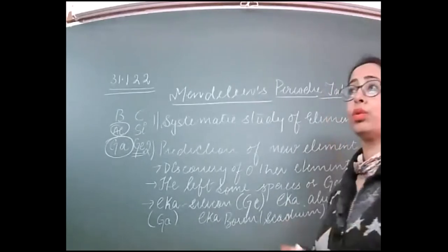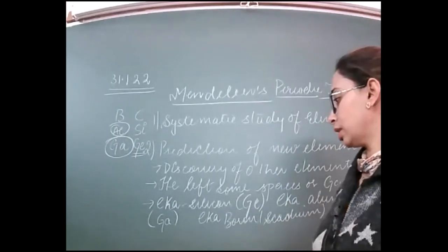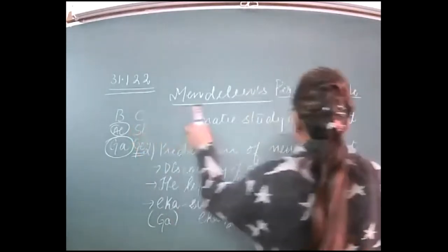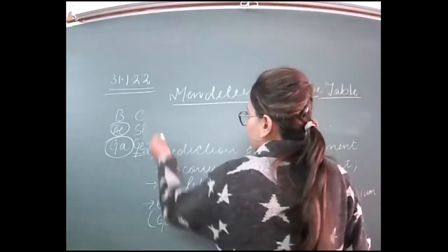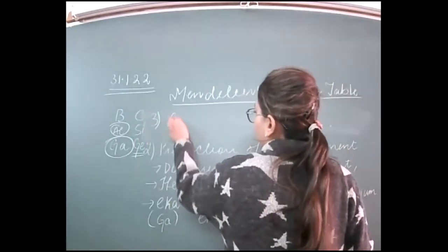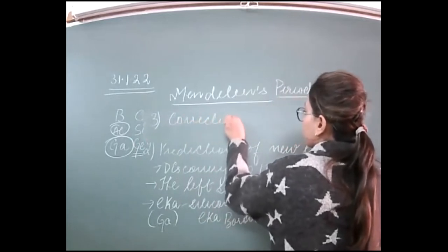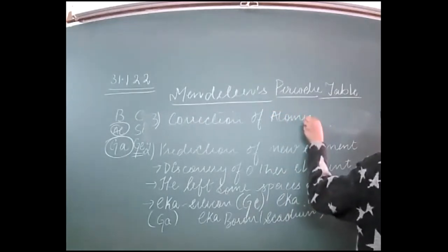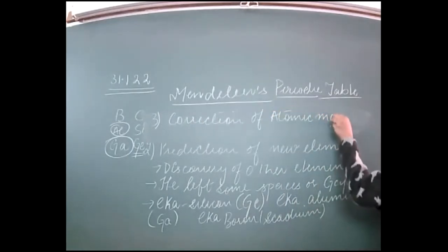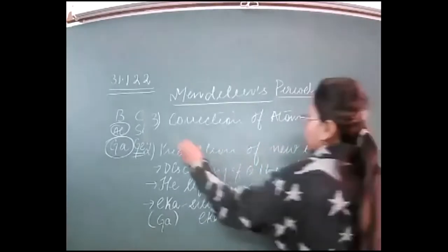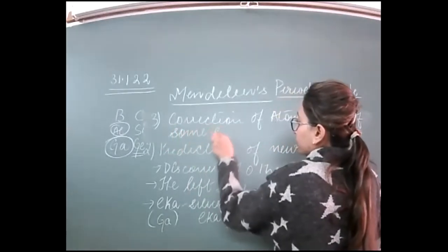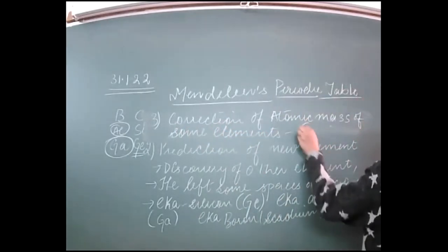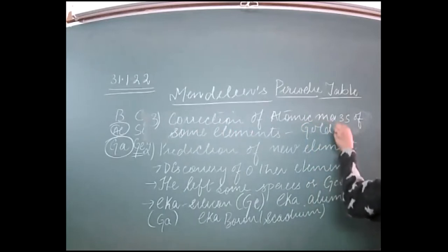The third merit is that he corrected the atomic masses of certain elements whose atomic masses were previously incorrect. He corrected and recorded the right values. For example, he corrected the atomic masses of gold and platinum.